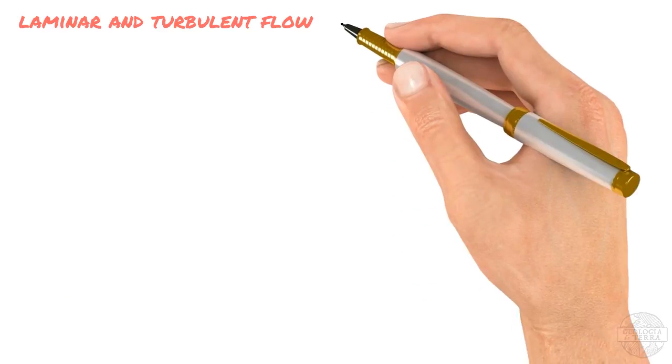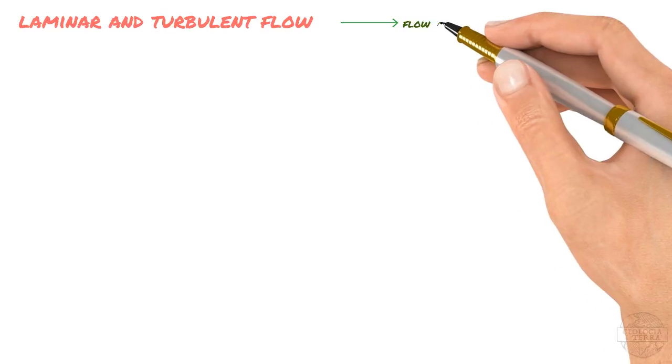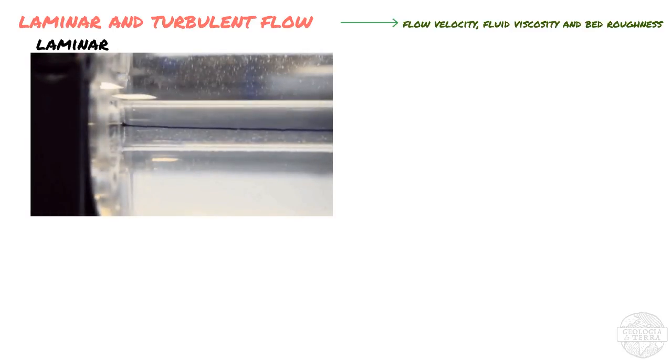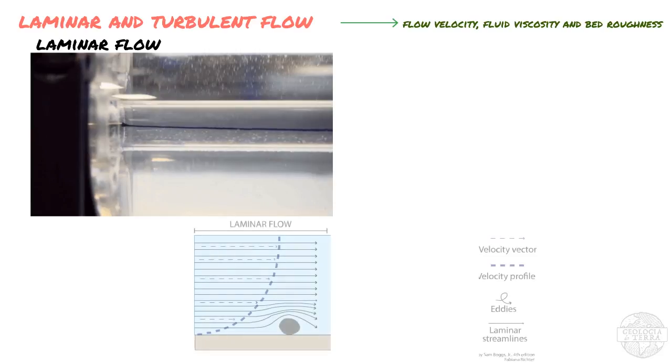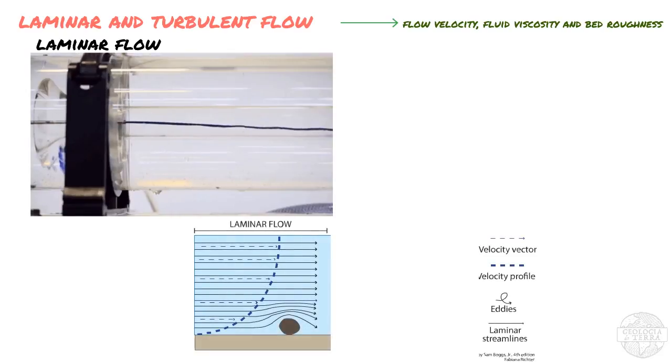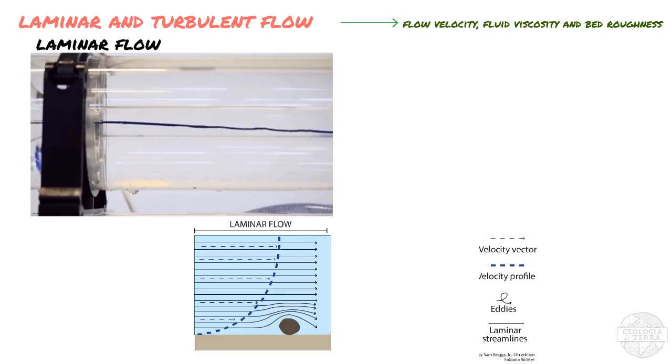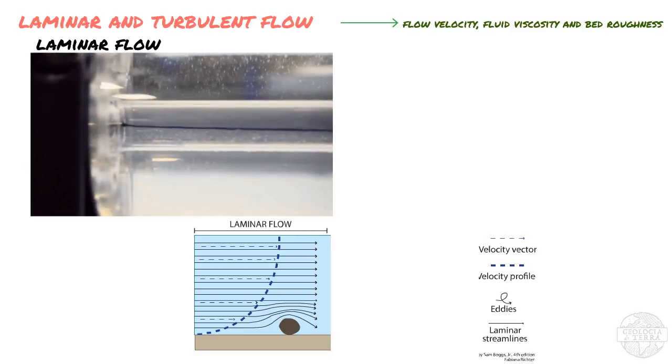There are two main types of flow, laminar and turbulent. And these types of flow occur depending on the velocity of the flow, the viscosity of the fluid and the roughness of the layer above which it flows. Experiments with dyes injected into a flowing fluid show how they occur. In a laminar flow, all molecules in the fluid flow parallel to each other in the direction of transport. A laminar flow can be visualized as a series of parallel streamlines that never intersect each other.